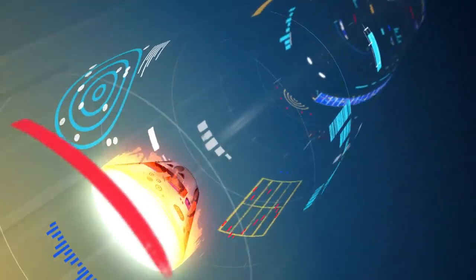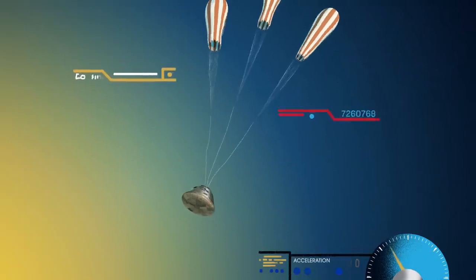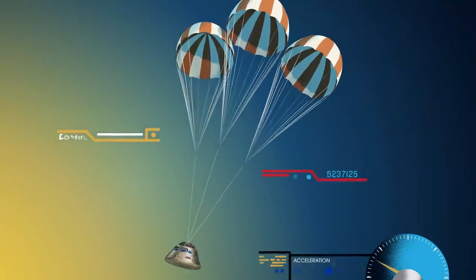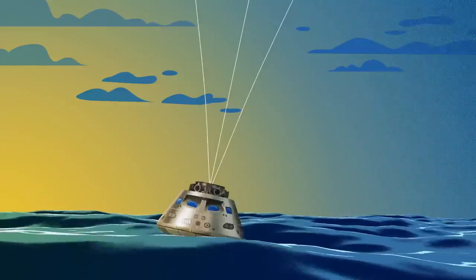With the Orion now at just 300 miles per hour, a series of parachutes uniquely tested and produced for this moment deploy, decelerating the craft to just 20 miles per hour for splashdown.